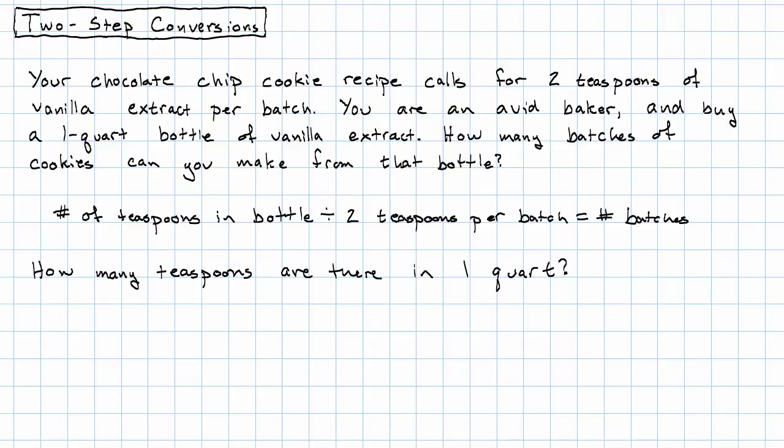So you go out and you look up some conversion factors and you can't find it. This is what you can find. You can find that one quart equals four cups and that one cup equals 48 teaspoons. But you can't find how many teaspoons in a quart. Good news. You can do what's called a two-step conversion in order to go from quarts to cups and then cups to teaspoons.